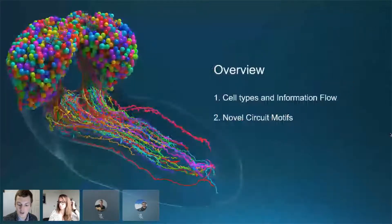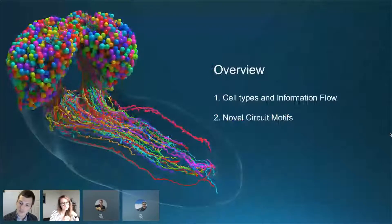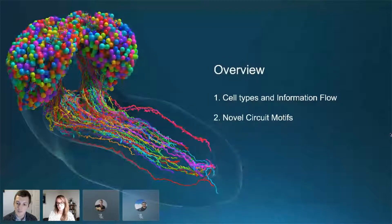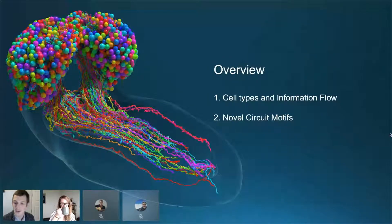As an overview of my talk, I'm going to tell you about some cell types we've identified in the brain, how information flows through them, as well as some novel circuit motifs to give you a sense of the kinds of analyses we can perform with this connectome.